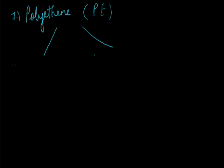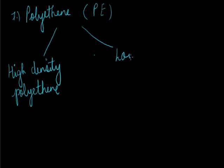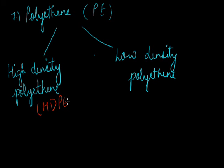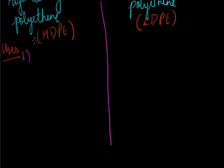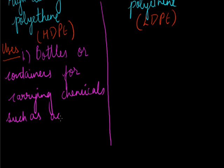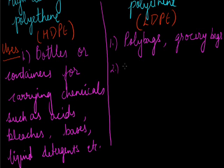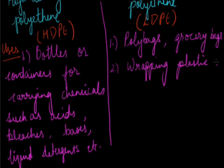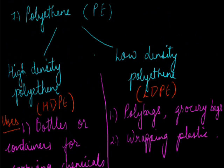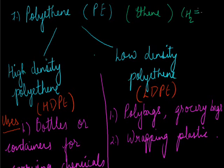The next plastic is polythene, which can be of two types: high density polythene (HDPE) and low density polythene (LDPE). The monomer unit for polythene is ethylene (CH2=CH2). HDPE is used for making bottles and containers for carrying chemicals such as acids, bleaches, bases, and liquid detergents. LDPE is used for making poly bags, grocery bags, and wrapping plastic.